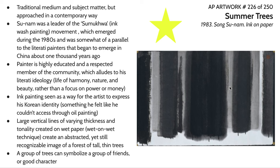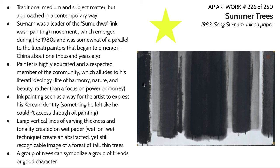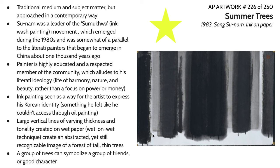A lot of the trees in this image are created using a technique called wet on wet — you soak the paper in water and then lay down large brush strokes of ink, which create these fuzzy fields at the edges. He then let that dry and put on drier layers of ink wash on top, creating rougher edges. It creates a highly abstracted image that is still recognizable as a forest of tall, thin trees.